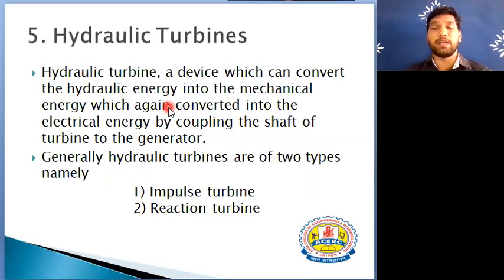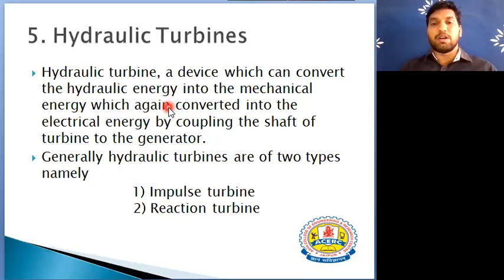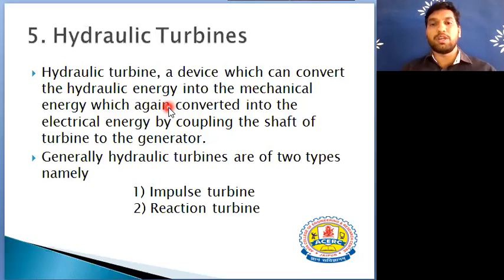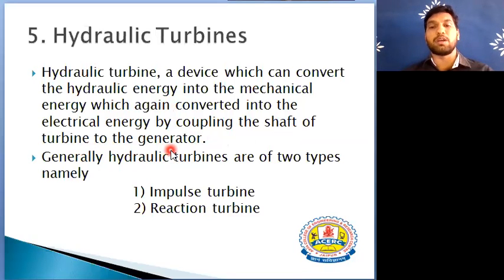Next, the hydraulic turbine is one of the most important parts of a hydroelectric power plant, which is coupled with a generator. The water stored in the reservoir has potential energy. This potential energy is converted into kinetic energy when the water comes out from the penstock through a nozzle or jet. When the water strikes the turbine, the kinetic energy is converted into mechanical energy. The turbine rotates and this mechanical energy drives the generator, producing electric energy. So the hydraulic turbine is a device that converts hydraulic energy into mechanical energy, which is then converted into electrical energy by coupling the turbine shaft to the generator.